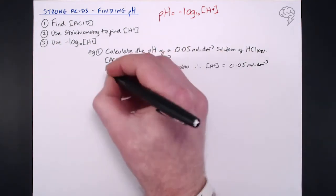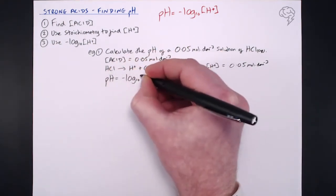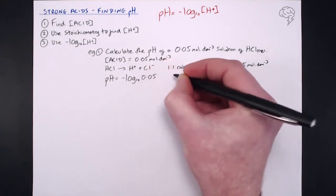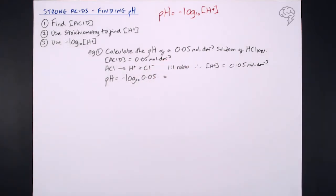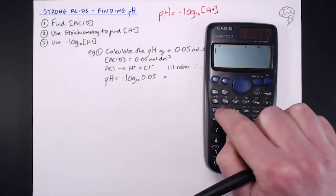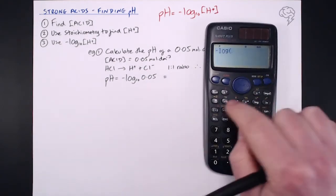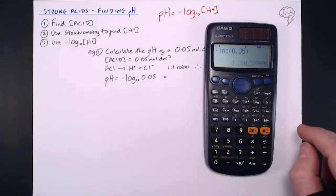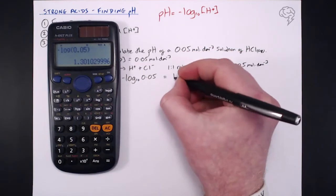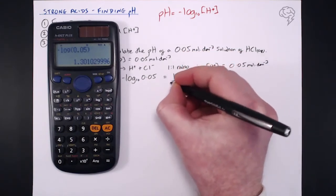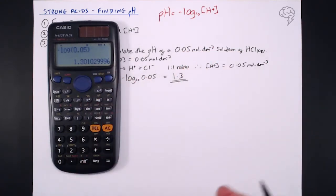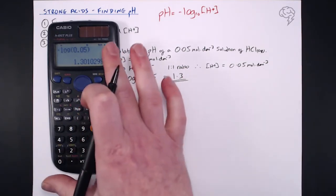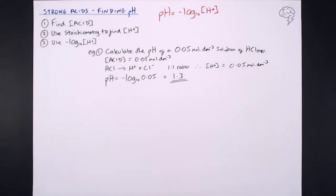So pH equals minus log base 10 of our hydrogen ion concentration, which is 0.05. Plugging that into the calculator — minus log of 0.05 — gives us a pH of 1.3. A lot of the time they will tell you how many decimal places to use; it's usually one decimal place. So that is our pH of our strong acid.